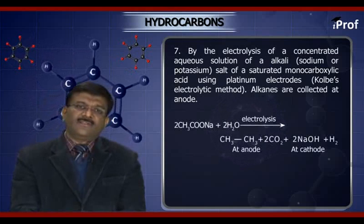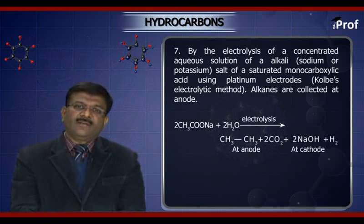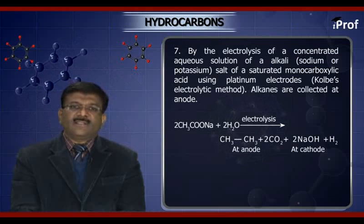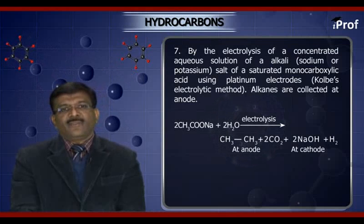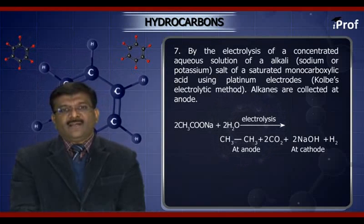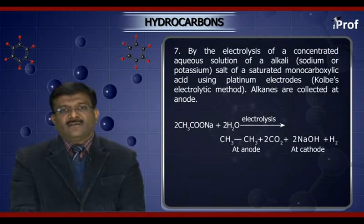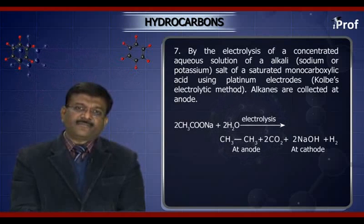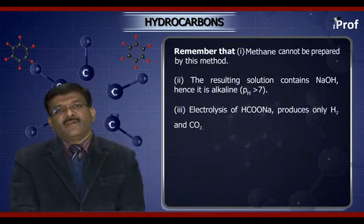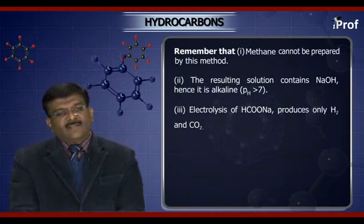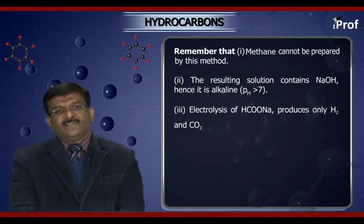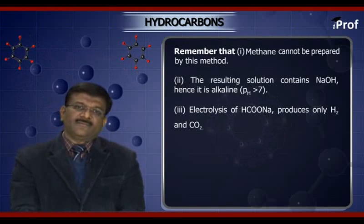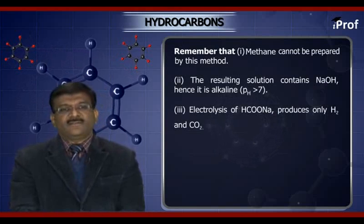The reaction involves sodium acetate plus water. After electrolysis, it gives CH₃ at the anode, along with the liberation of carbon dioxide, sodium hydroxide, and hydrogen gas at the cathode. Remember that methane cannot be prepared by this method. The resulting solution contains sodium hydroxide; hence it is alkaline, having a pH greater than 7.